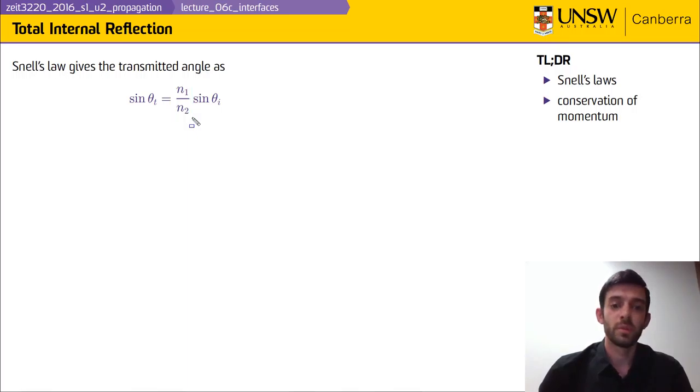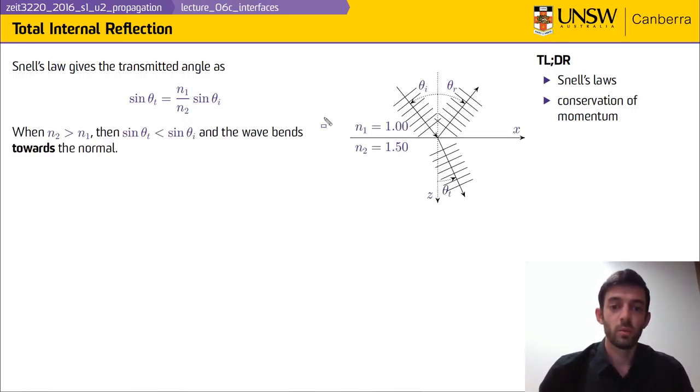If we look back at our initial example, we can select arbitrary n₁ and arbitrary n₂, but we can recognize n₁ = 1 as free space or vacuum or close enough to air, and then n₂ is going to be a typical glass, something like BK7. So if n₂ > n₁, then sin θ_t has to be less than sin θ_i, and that means θ_t is also less than θ_i. That means this angle right here has to be smaller and the ray will bend towards the normal, the normal being along the z-axis.